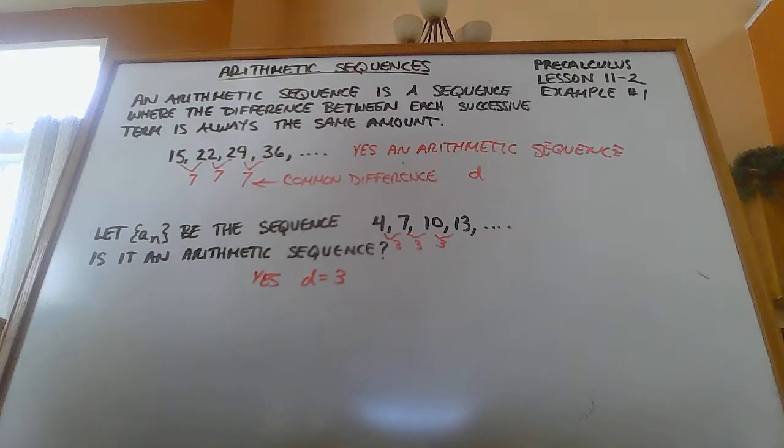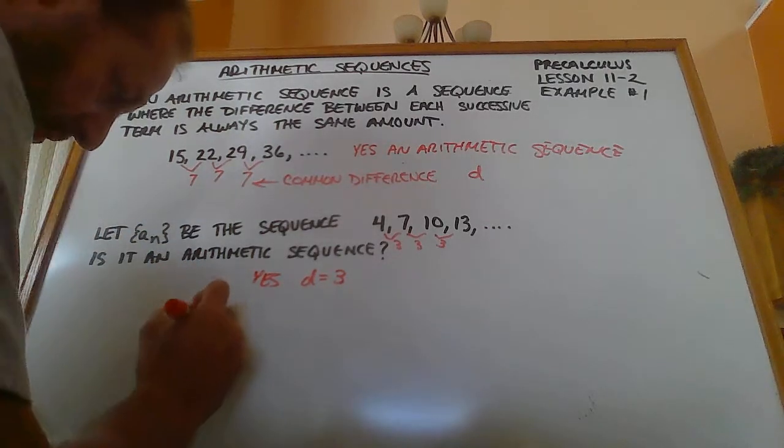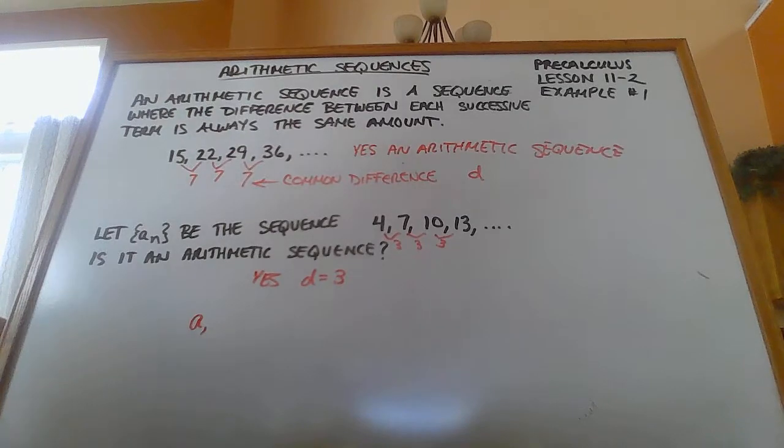Okay, so we have a pattern. The pattern of arithmetic sequence is the first term is always A. It's called the initial term, by the way.